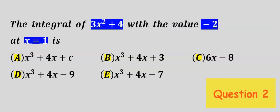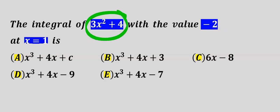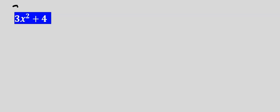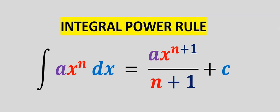Next let's consider this question: the integral of this function has a value of minus 2 at x equals 1. To solve this problem, step number 1 is to integrate this function with respect to x, and next we are going to apply the integral power rule.